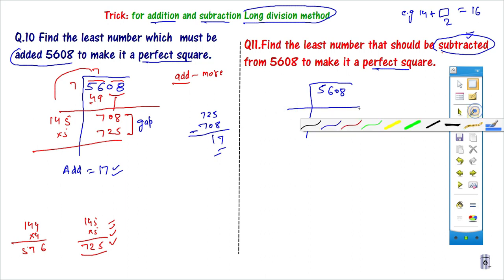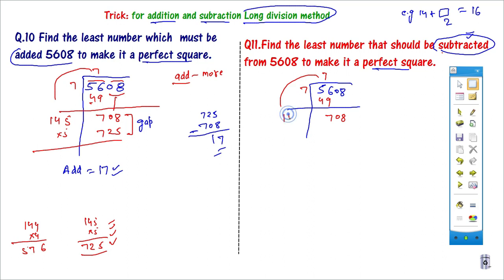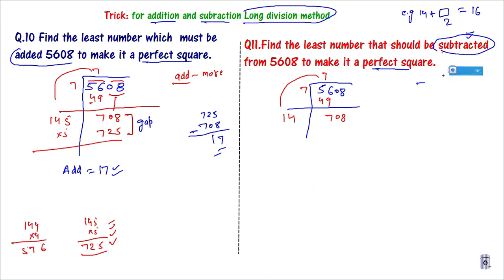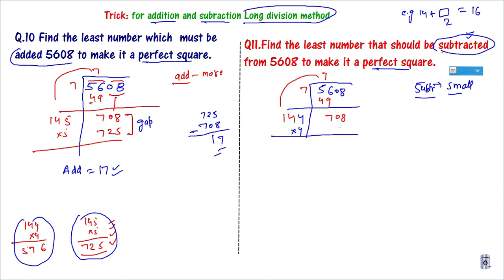For subtraction: the same process. 7, 7 = 49. Double of 7 is 14. I put 4 next to 14: 144 × 4 = 576. So 708 minus 576 = 132 is the remainder. When the question asks what to subtract, the remainder itself is the answer. So we subtract 132 from 5608 — wait, from our question number. The remainder 132 is what we subtract to get the previous perfect square, which is 5476 (74² = 5476).